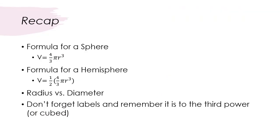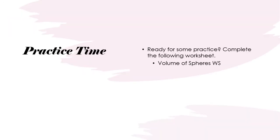Let's do a quick recap of finding the volume of a sphere. Volume of a sphere: volume equals four-thirds pi r cubed. For a hemisphere, you're just taking the formula for a sphere and either multiplying it by a half or dividing it by two. Last but not least, you have to remember the difference between a radius and a diameter — radius is half of your diameter. Also, I was labeling every single thing, so if it's feet, remember it's going to be to the third power, or cubic feet.